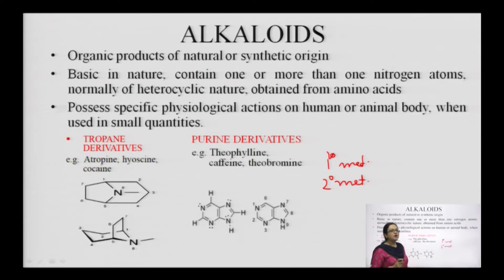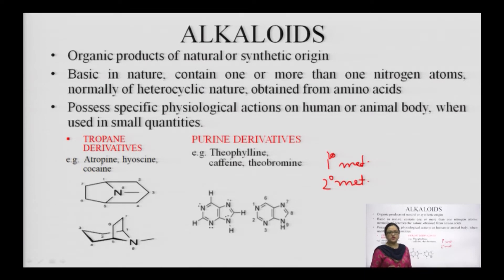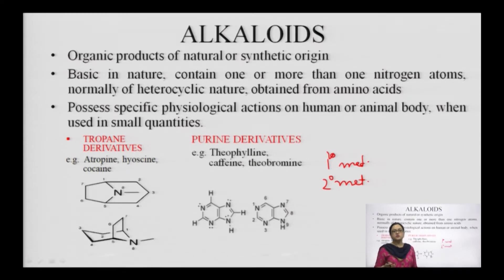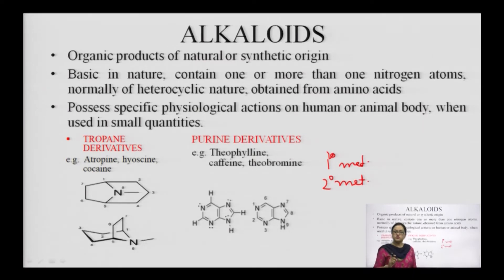What are alkaloids? Alkaloids are organic products of natural or synthetic origin and these are basic in nature, containing one or more nitrogen atoms, normally of heterocyclic nature. These are derived from various amino acids — for example, indole alkaloids are obtained from tryptophan, or other amino acids like tyrosine or alanine, which are precursors for deriving various alkaloids in plants. These alkaloids are toxic in nature and possess specific physiological actions on the human body when used in small quantities.